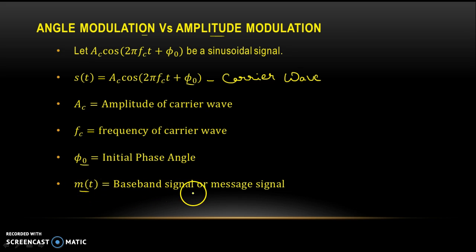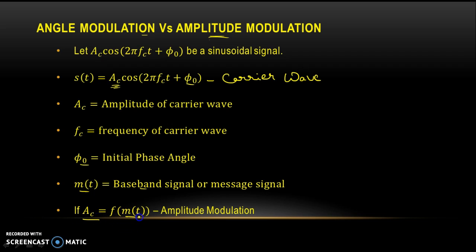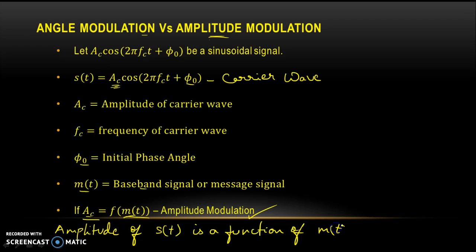Let m(t) be a message signal or baseband signal — I will use them interchangeably. In amplitude modulation, if the amplitude of the carrier wave is a function of the message signal m(t), we call this condition amplitude modulation. The amplitude of s(t) is basically a function of m(t), and in that case we know this technique of modulation as amplitude modulation.